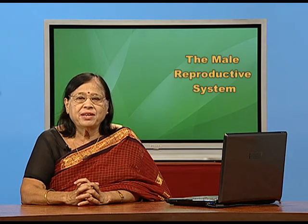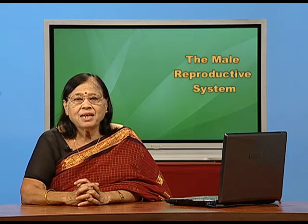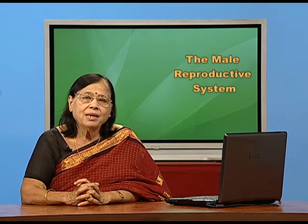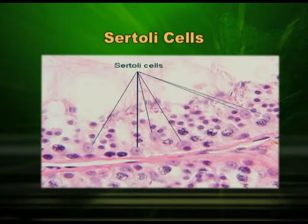In between the seminiferous tubules there are interstitial spaces, and there you find cells which are secretory in nature called interstitial cells or Leydig cells. They are the source of the male hormone androgens, in particular testosterone. Sperm is formed inside the seminiferous tubule and the sex hormone comes from the interstitial spaces. Leydig cells in the interstitial space are the only source of sex hormone in the case of men, and because of this hormone men have masculine characteristics like beard, moustaches, and external genitalia. Sertoli cells are nutritive and supportive in nature and are present in the seminiferous tubule.